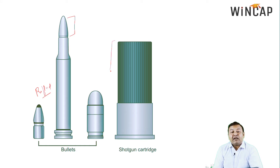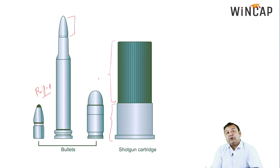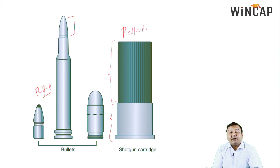The second one is your shotgun cartridge. As we can see, it is structurally different — it has two basic parts. One part is either plastic or cardboard based, and the second part is metallic. Unlike the rifled cartridge, the shotgun cartridge is composed of multiple pellets, which are housed inside this particular chamber.